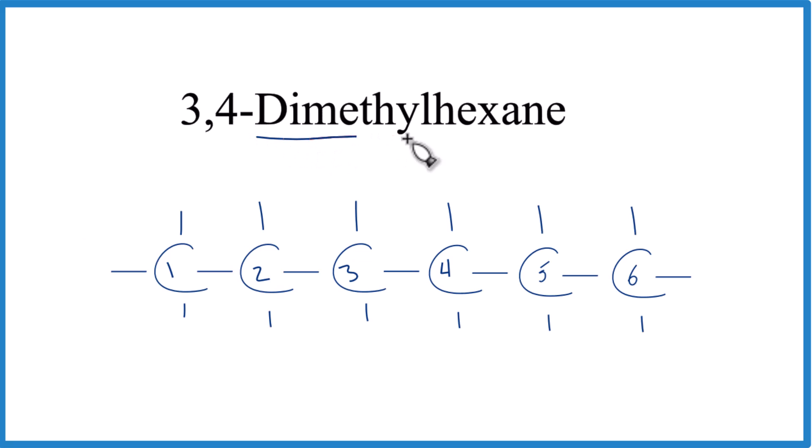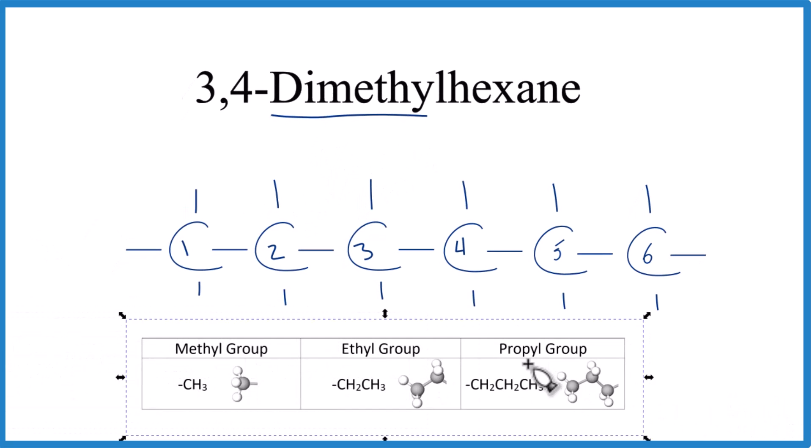So dimethyl. When we talk about a methyl group, we're talking about CH3, a carbon with three hydrogens. So we're going to have methyl groups, two of them, because we have the di on the third and the fourth, right here, the third and the fourth carbons. Let's draw those.